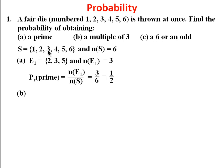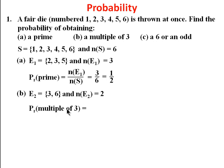For part (b), a multiple of three — we represent the collection of multiples of three in the sample space as E2. That's the set {3, 6}, so n(E2) = 2. The probability of getting a multiple of three is n(E2) over n(S), which is 2 over 6, and that gives us one over three.